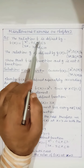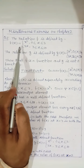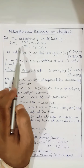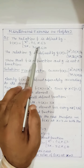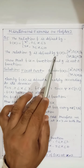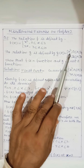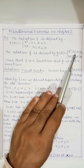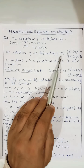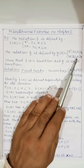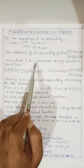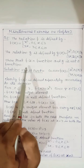Question number 1. The relation f is defined by f(x) = x² for 0 ≤ x ≤ 3, and f(x) = 3x for 3 ≤ x ≤ 10. The relation g is defined by g(x) = x² for 0 ≤ x ≤ 2, and g(x) = 3x for 2 ≤ x ≤ 10. Show that f is a function and g is not a function.